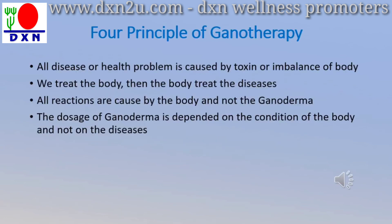The first principle is that all diseases or health problems, whatever problem faced by our body, are caused by only two causes: toxins and imbalance of the body. Only two causes. Secondly, we treat the body, then the body treats the disease. We never treat the disease. This is the second rule.